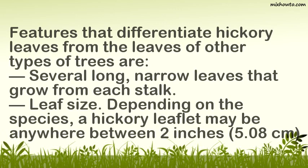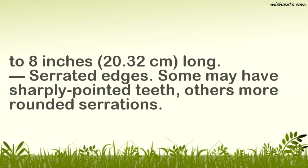Leaf size: Depending on the species, a hickory leaflet may be anywhere between 2 inches (5.8 cm) to 8 inches (20–32 cm) long. Hickory leaves also have serrated edges — some may have sharply pointed teeth, others more rounded serrations.